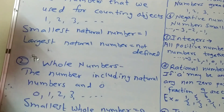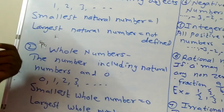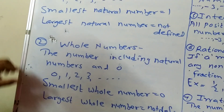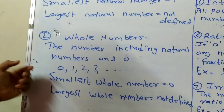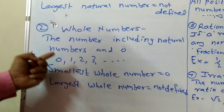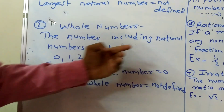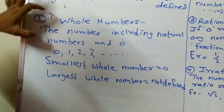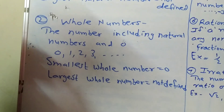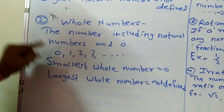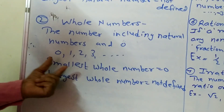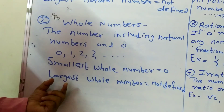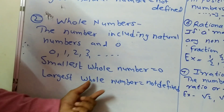The second type is whole numbers. The numbers including the natural numbers and 0 are called whole numbers — that is 0, 1, 2, 3, etc. This set of numbers is called whole numbers. The whole numbers start from 0, so the smallest whole number is 0 and the largest whole number cannot be defined.